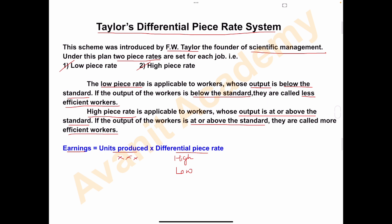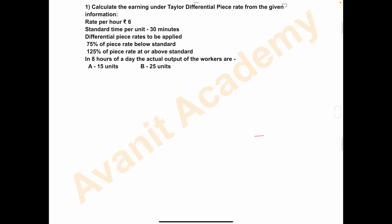Let's solve a problem on Taylor's Differential Piece Rate System. Problem number one: Calculate the earnings under Taylor's Differential Piece Rate from the given information. Rate per hour: ₹6. Standard time per unit: 30 minutes. Differential piece rate: 75% of piece rate for output below the standard, and 125% of piece rate for output at or above the standard. In 8 hours, the actual output of workers — A: 15 units, B: 25 units.